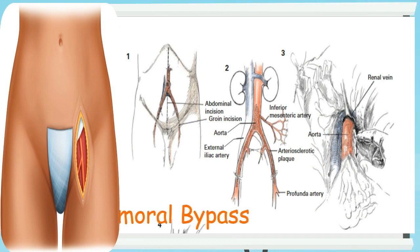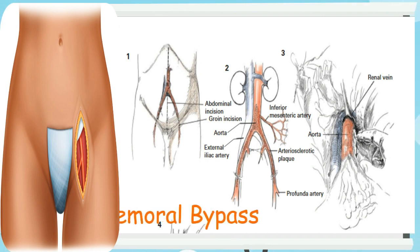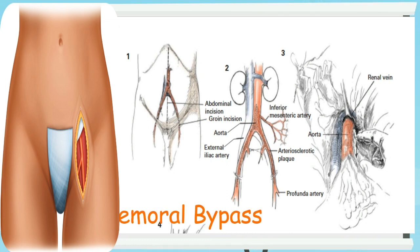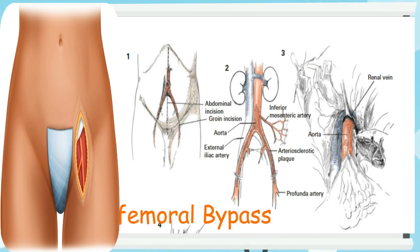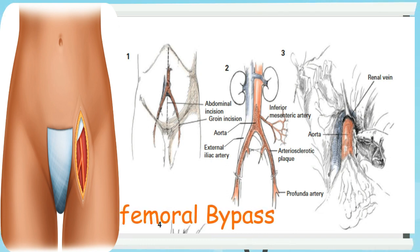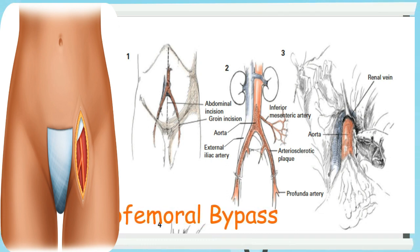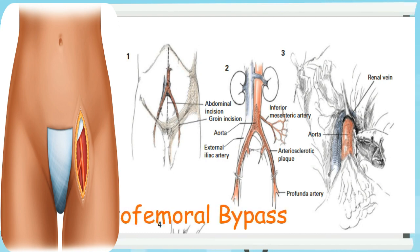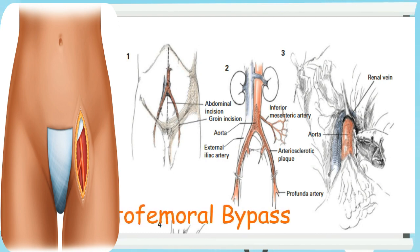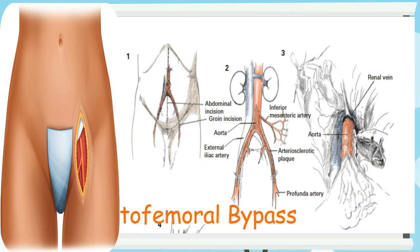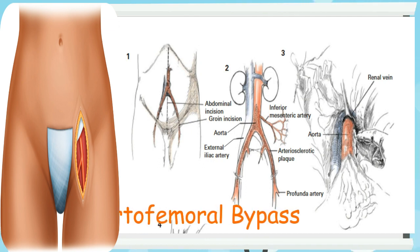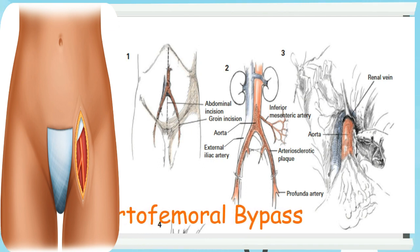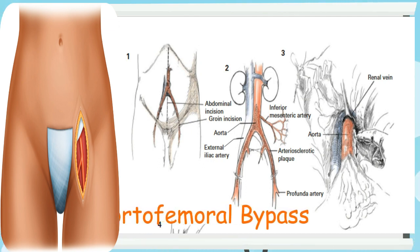As shown in Figure 3, it is usually not necessary to encircle the aorta or to free it completely. This often adds to troublesome bleeding from lumbar arteries and veins. Additionally, if the left renal vein is not visualized, it may lie beneath the aorta and be injured by such a dissection.